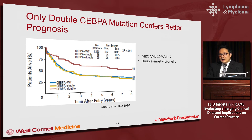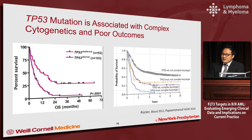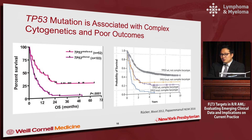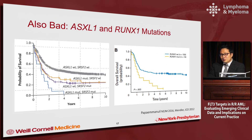Like in any cancer, TP53 mutation is bad. In AML, TP53 mutation is associated with complex cytogenetics, but regardless of complex cytogenetics, having a TP53 mutation is independently associated with poor overall survival. Also, in patients treated with intensive chemotherapy, having ASXL1 and RUNX1 mutations confers poor prognosis, and patients with these mutations have worse outcomes.